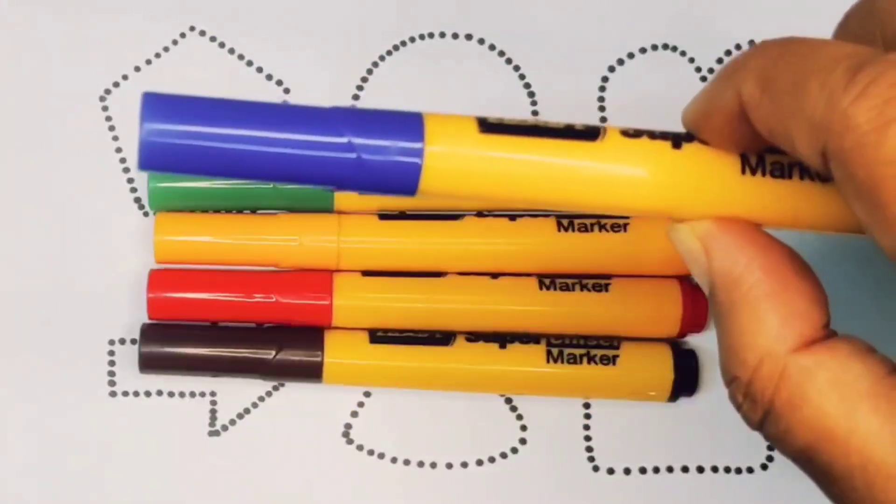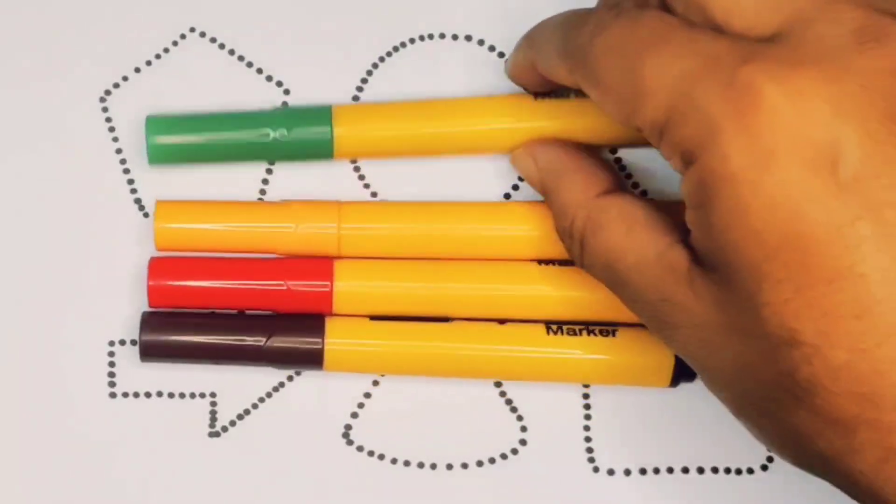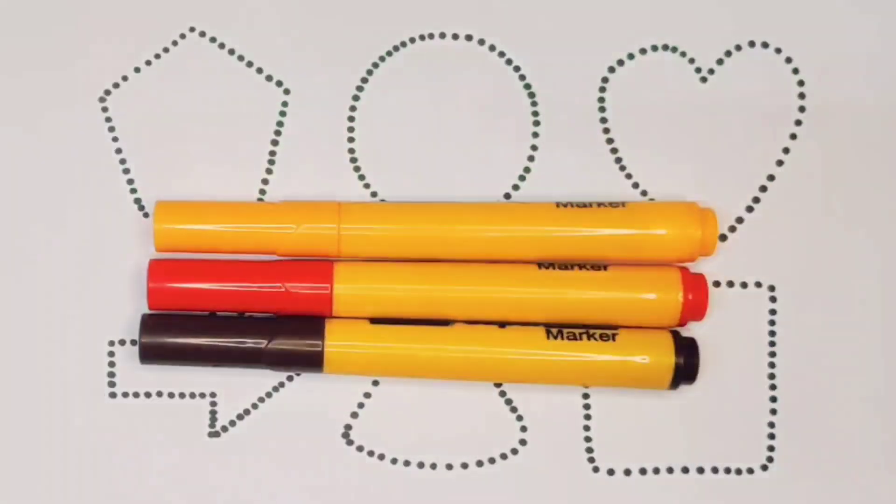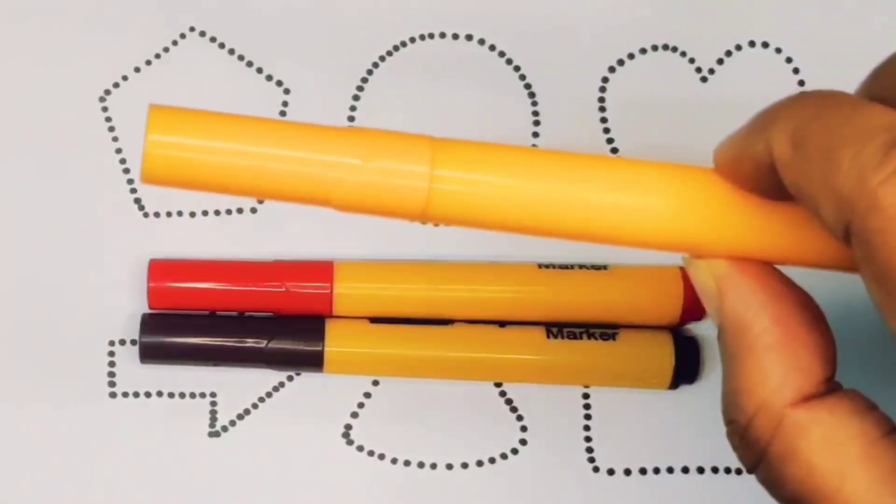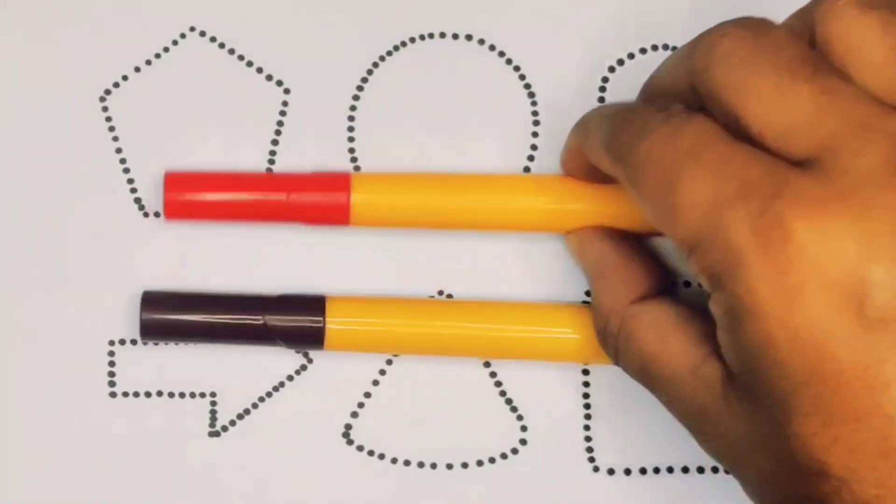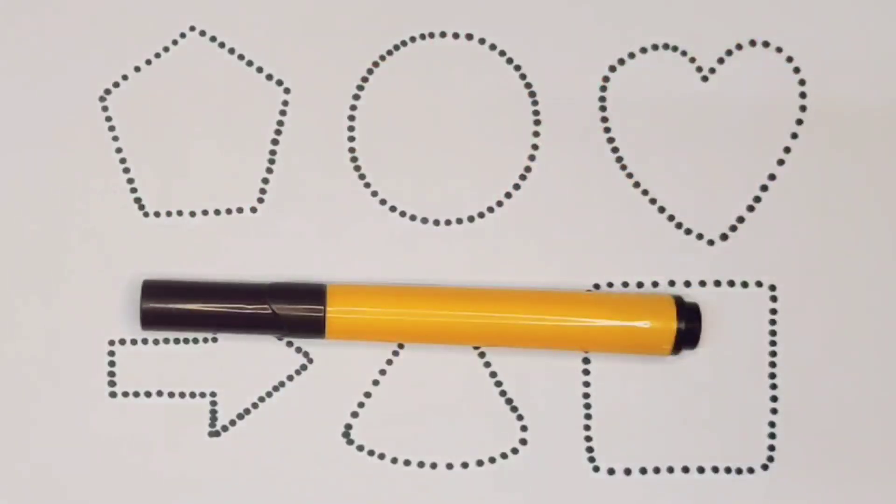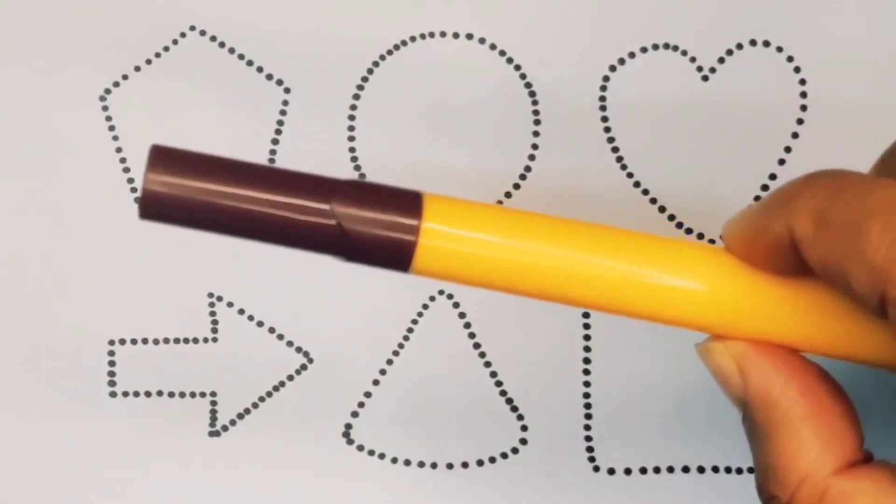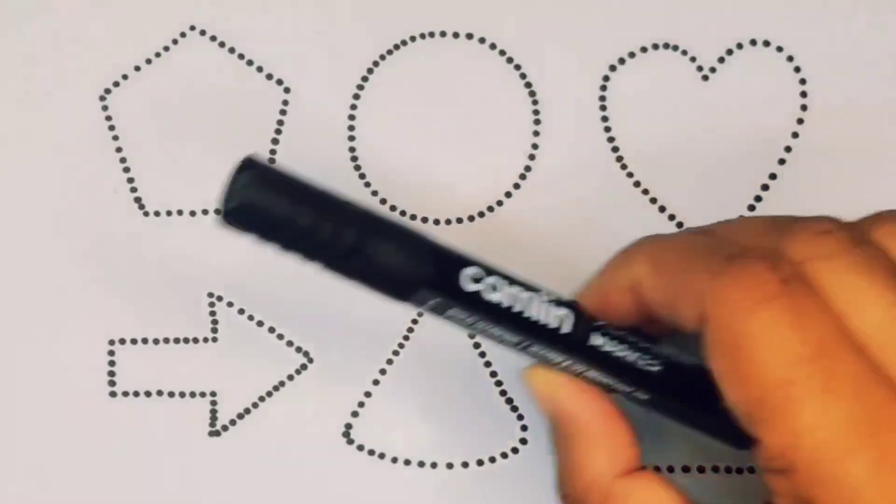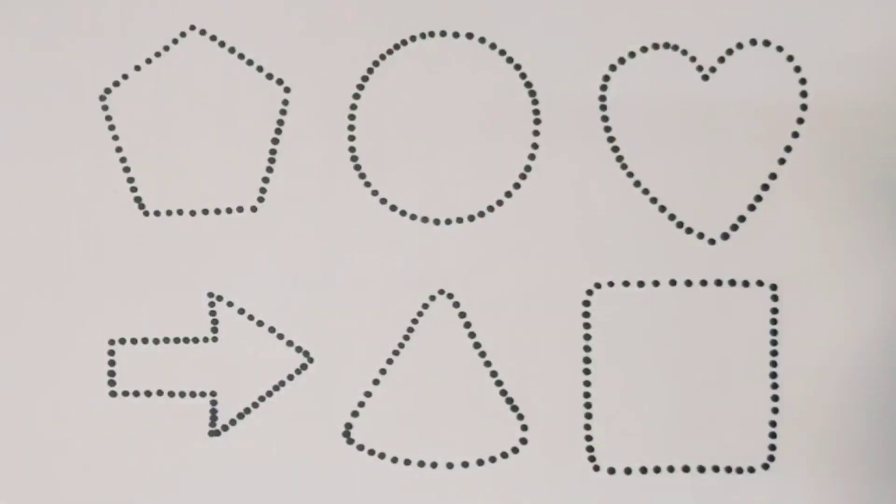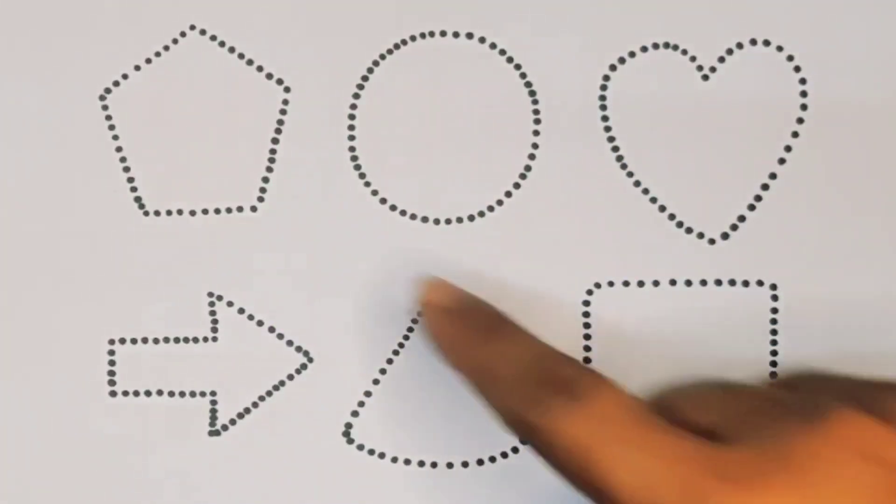Blue color, green color, orange color, red color, chocolate color, and black color. Now let's learn the 2D shapes: pentagon.